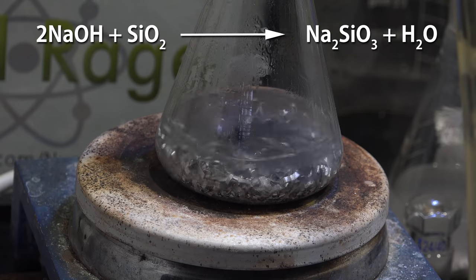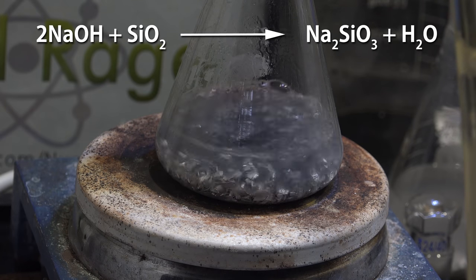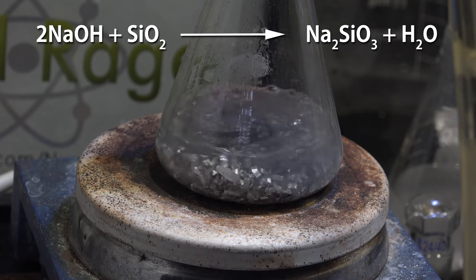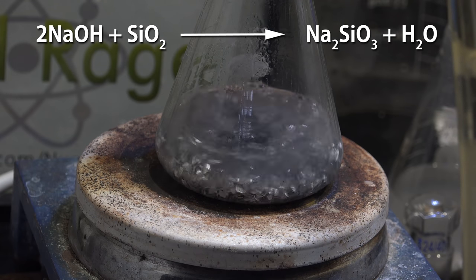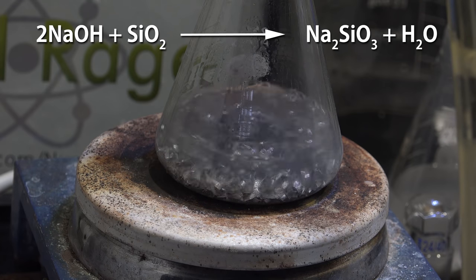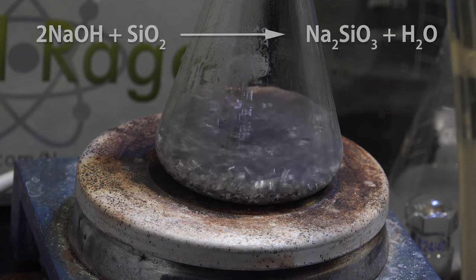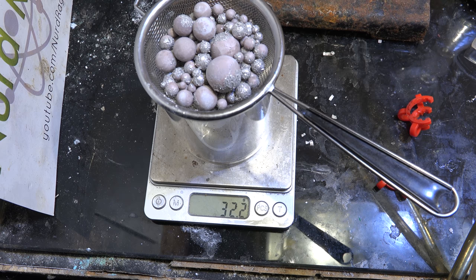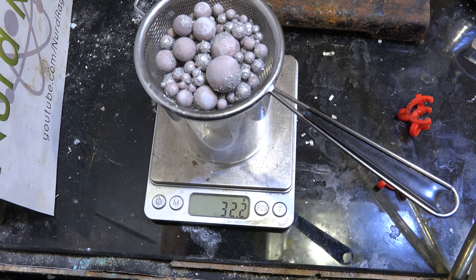I think another contributing factor to the losses was that the glassware destruction reaction is also a water generating reaction. This causes an unmitigated chain reaction of glassware destruction and the water further consumes our product. I didn't think we'd lose almost 30% from the yield but judging from this near quantitative reaction that seems to be the case.